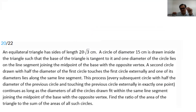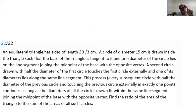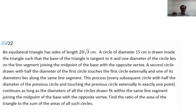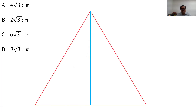The next question involves an equilateral triangle. I've added a figure since the question didn't include one. An equilateral triangle of side 20√3 has a circle with diameter 15 drawn inside, tangential to the base, with one diameter lying on the median. More circles are drawn similarly. We need the ratio of the triangle's area to the sum of all circle areas.